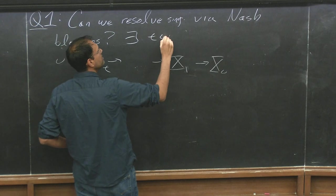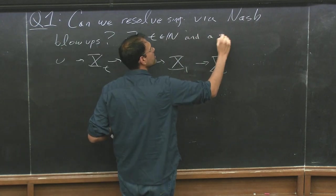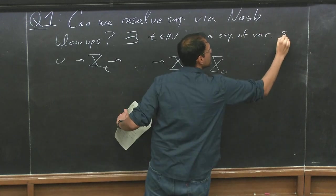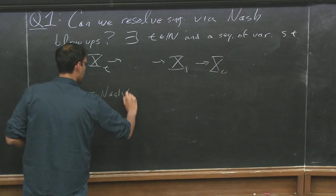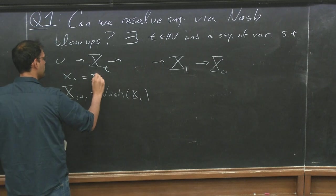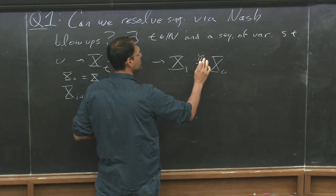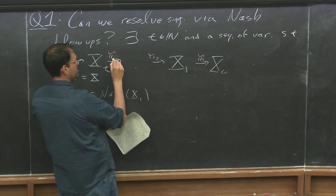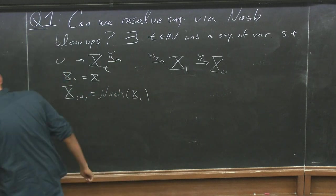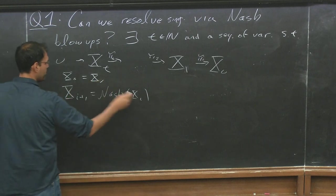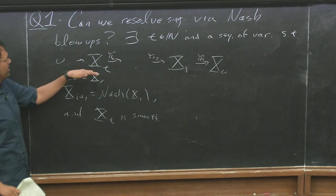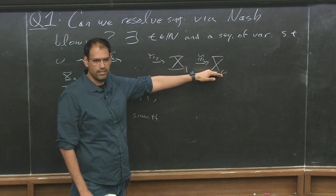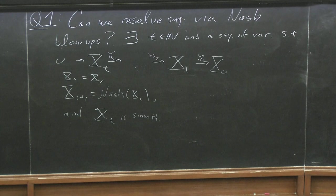So there exists a T, natural number, and a sequence of varieties such that xi plus 1 is equal to the Nash Blow-up of xi, x0 is equal to x, the original variety, and then we have maps here which are the maps that we took such that this happens, and the last one is smooth. So this way, if we take the composition of all the maps, we obtain a resolution of singularities. And it would be a very nice algorithmic process to get a resolution of singularities if the answer to this were yes. And we don't know if that is true.